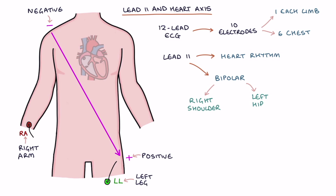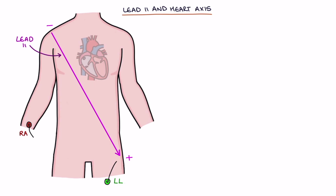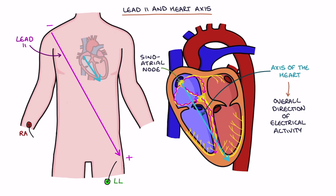Lead 2 shows the electrical changes in the space between the right shoulder and the left hip. This is considered to be at 60 degrees across the body, where 0 degrees is horizontal from the person's right to left, and 90 degrees is directly vertical from head to feet. Lead 2 aligns with the axis of the heart in most people. The axis of the heart is the overall direction that electrical activity flows from the sinoatrial node down to the ventricles. The normal heart axis is somewhere between minus 30 and plus 90 degrees.